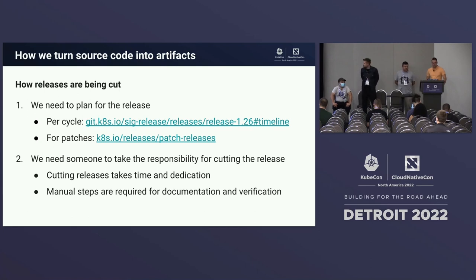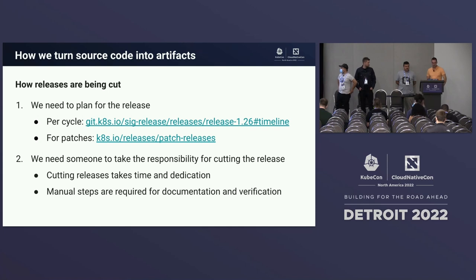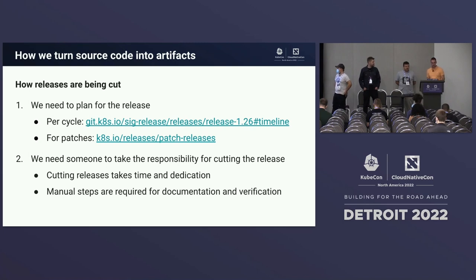The first thing we need to outline is what's necessary to actually cut a release. We need personas who actually do the release cut. We have two approaches: an actual release cycle going around three to four months with three releases per year, and patch releases with a yearly support period cut mostly every month. We need someone who takes over responsibility for cutting a release — people who have the time, dedication, and are able to do the manual steps for documentation and verification, which can take up to multiple hours per release.